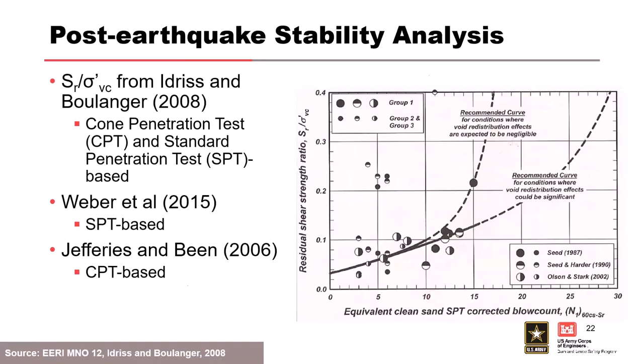Other researchers have updated this work, including Ray Seed, Weber et al., and Jefferies and Been, who have published guidance on residual shear strength. Most are either SPT-based or CPT-based correlations. Researchers have found that CPT data is more reliable for liquefaction triggering analyses, so if you can gather CPT data, that is the preferred data for seismic evaluations. SPT data and shear wave velocity data are secondary and can be used but are not preferred.